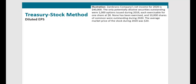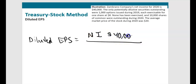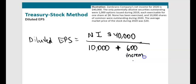Diluted EPS = net income ÷ (weighted average shares + incremental shares). Net income is $40,000, no preferred dividends. We have 10,000 shares plus 600 incremental shares = 10,600. Diluted EPS = $40,000 ÷ 10,600 = $3.77.